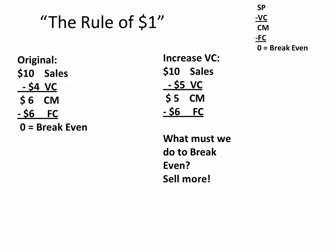How about if I increase my variable costs? We start with the ten dollar sales price, now we change the variable cost by one dollar — subtracting five dollars of variable cost gives us a five dollar contribution margin. What must we do to break even? We must sell more units. So our break-even point in units has changed, and now our contribution margin has also changed.